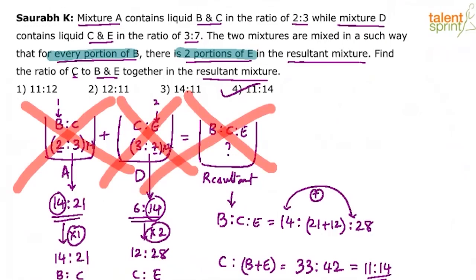Just play with the ratios. One ratio is 2 is to 3. The other ratio is 3 is to 7. First of all, since we are talking about B and E, like for every portion of B, we want two portions of E. What do you do is B part here 2 and E part here 7 have to be balanced. Do that.